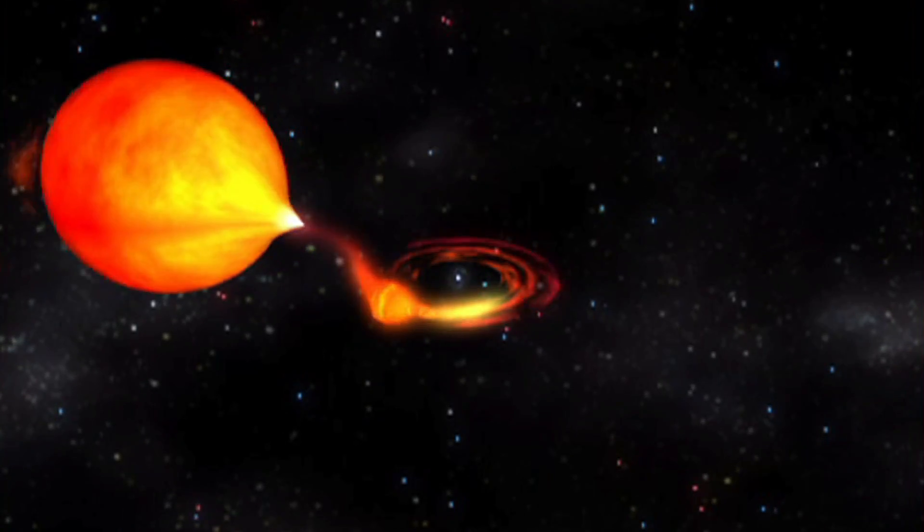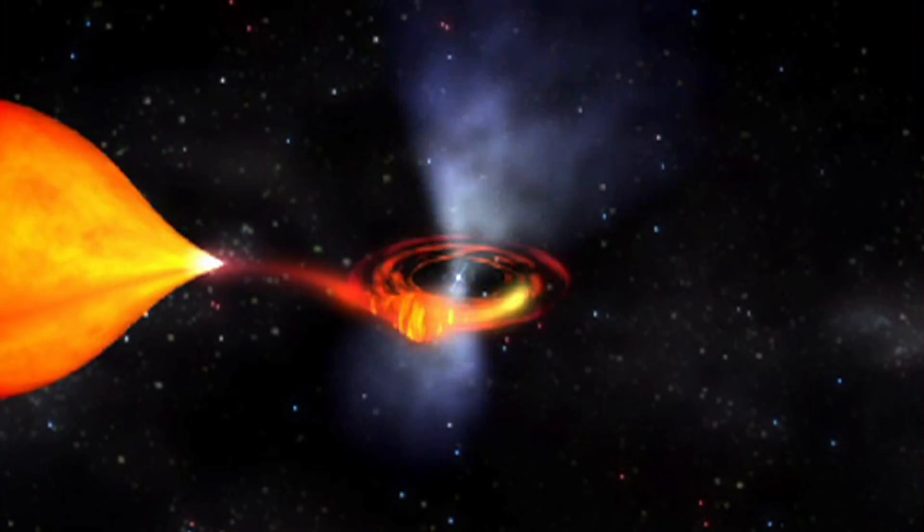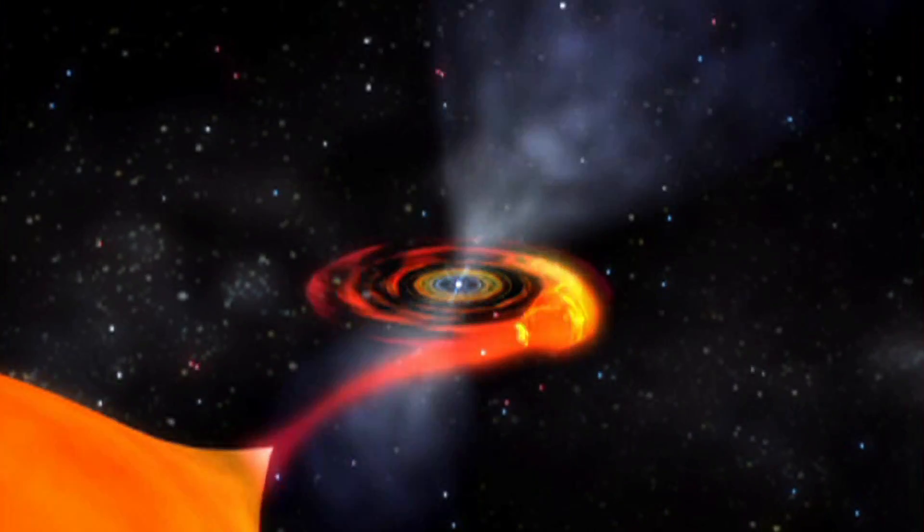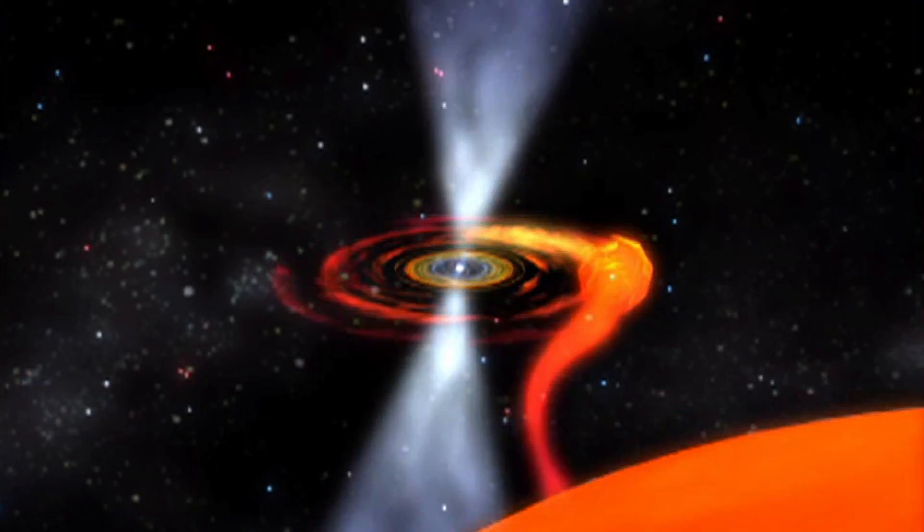It transfers material in the form of a disk onto the neutron star, and that transfer of material also transfers angular momentum, which means that you spin that star, the neutron star, faster and faster.